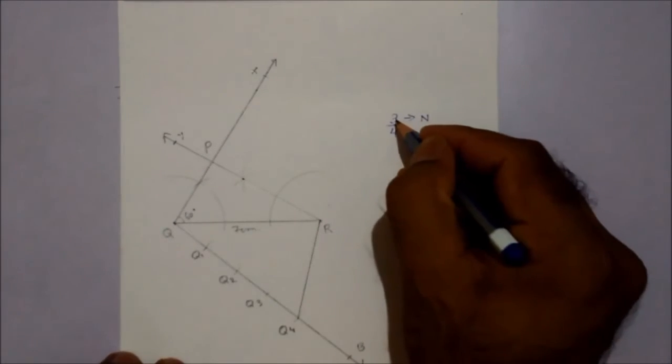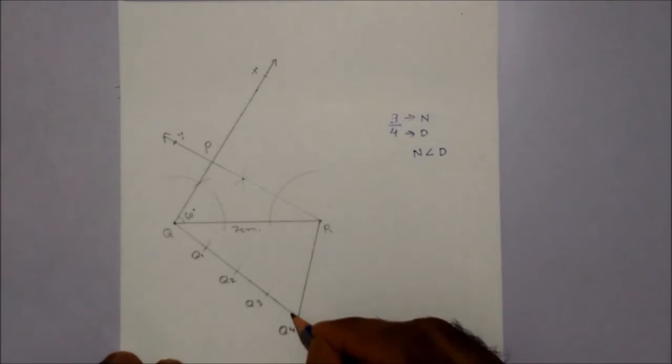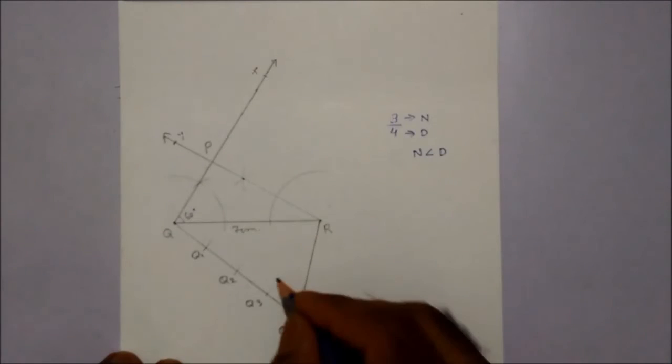Since the new triangle has 3 parts, we will draw the parallel line or same angle from here, Q3.